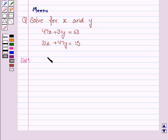The given two equations are 47x plus 31y is equal to 63 and 31x plus 47y is equal to 15. Let's name this as equation 1 and this as equation 2.